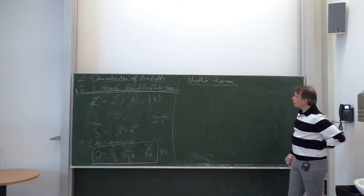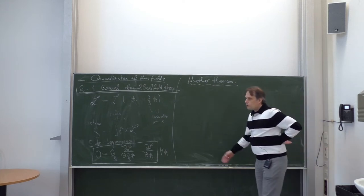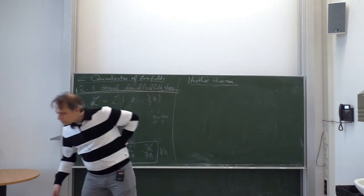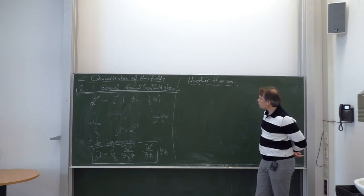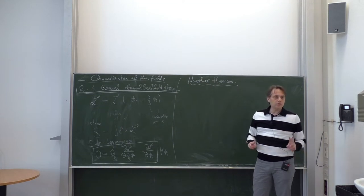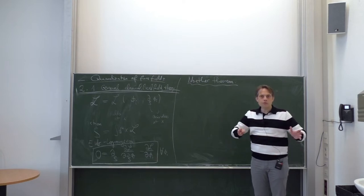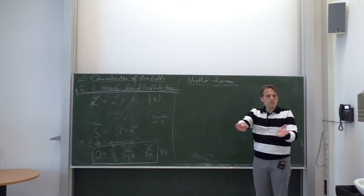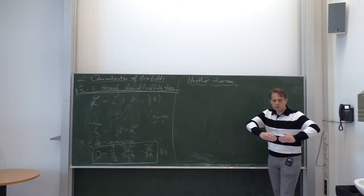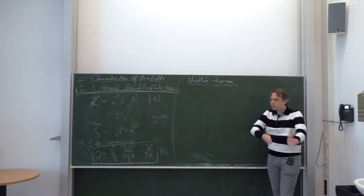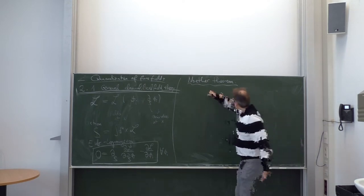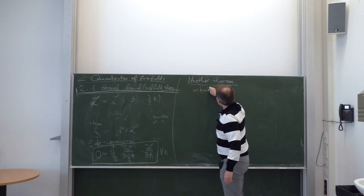Let us derive the Noether theorem. The symmetries the Noether theorem talks about are infinitesimal or continuous symmetries — not symmetries like reflection, but continuous symmetries such as translations, Lorentz transformations, or internal phase symmetries where you can have a continuous transformation with a limit to the identity. Then you can speak of infinitesimal variations.